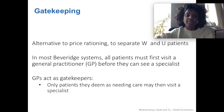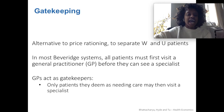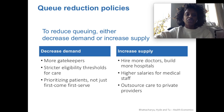Another way of cutting down on wait times is gatekeeping — a way of separating the W's from the U's without distinguishing between U and U-P. In most Beveridge-type systems, all patients have to visit a general practitioner, like a primary care physician, before they can see a specialist. So the GPs act as gatekeepers, and only the patients they deem as needing care can visit a specialist — it's a kind of triaging.